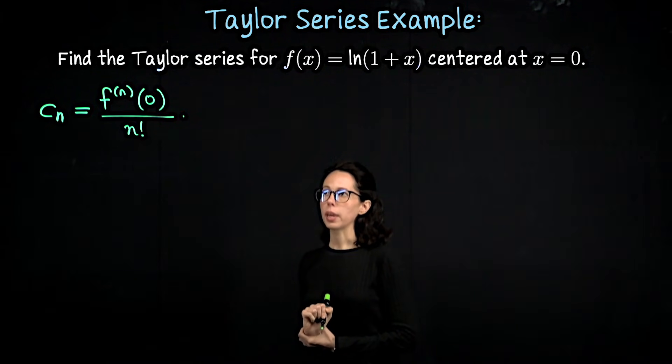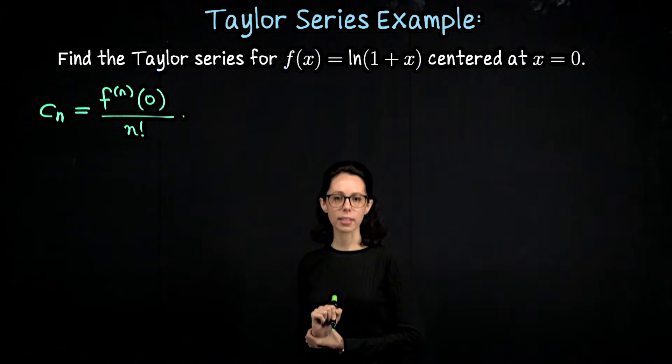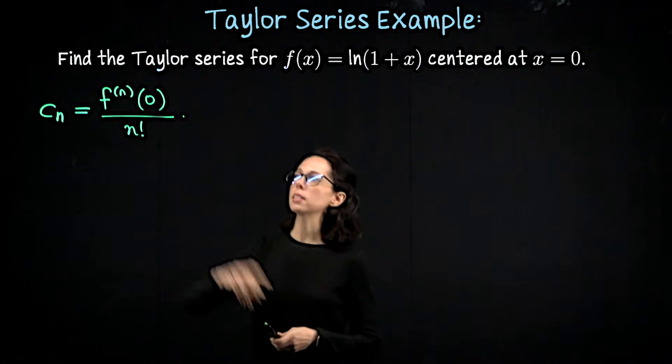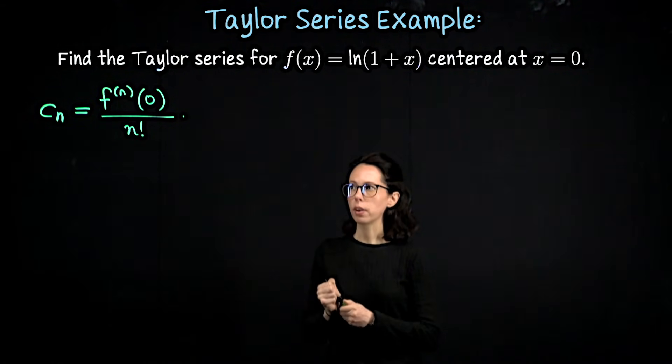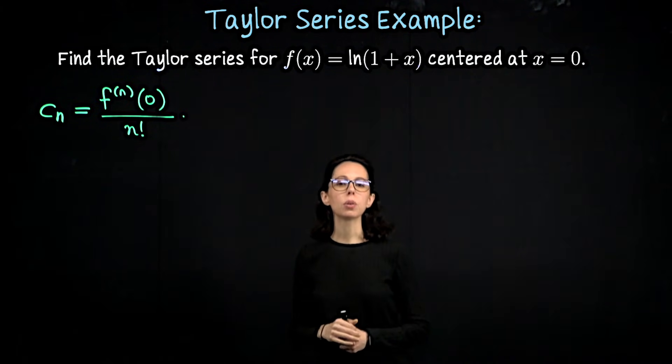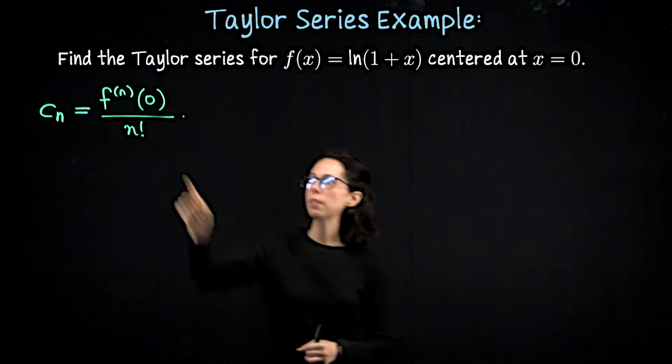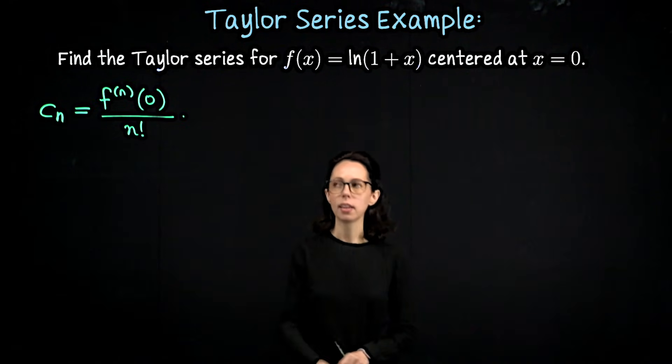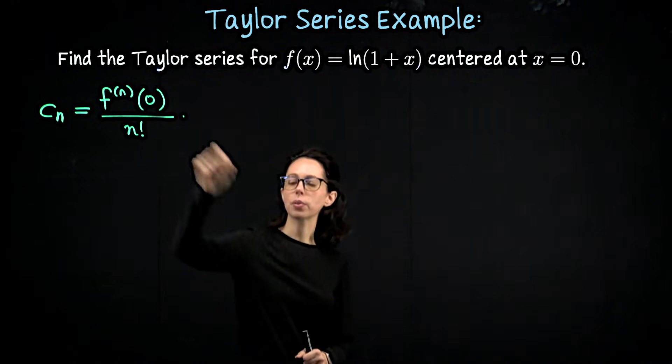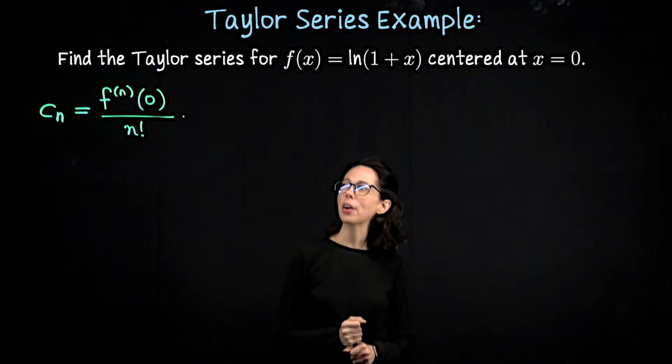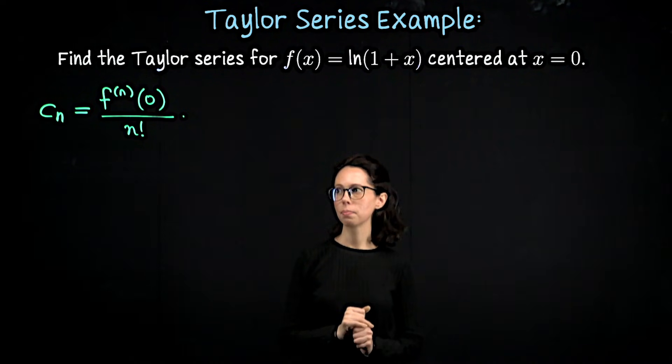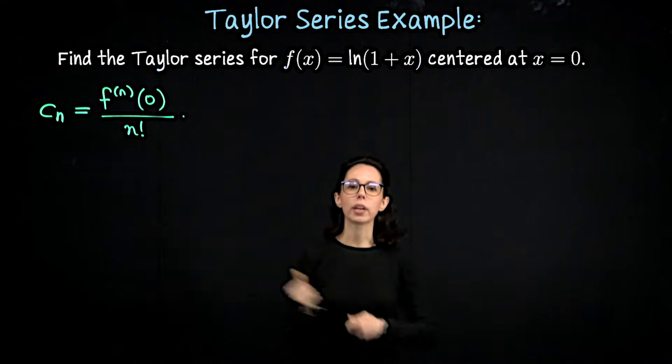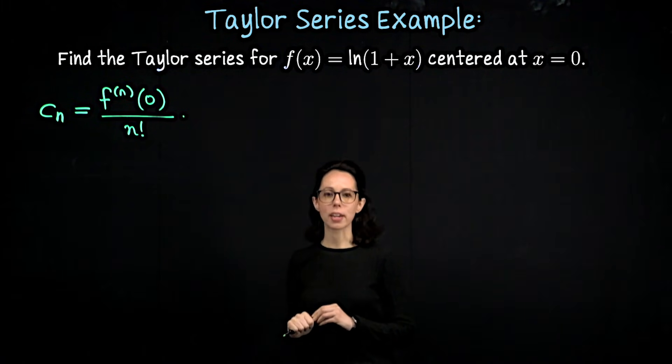What we are going to do is take our function f(x) equals natural log of 1 plus x, and I want to start by just computing these derivatives. So I'm going to write f prime, f double prime, until we see a pattern that we can describe in terms of the general index n. We'll differentiate, plug in x equals 0, differentiate, plug in x equals 0, until we have an understanding of what this numerator should look like for a general index. Then we will divide by n factorial, and at that point we will be able to write down our Taylor series.